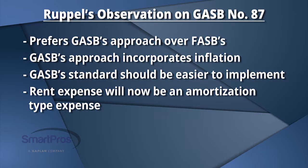One important thing for governments to remember is that what they had called rent expense in the past under prior leases is really going to change to amortization-type expense. So in terms of budgeting, in terms of grants, and any impact that might have, they need to anticipate that change and how rent expense will be reported differently in the future.